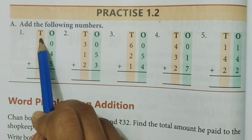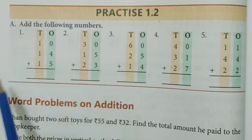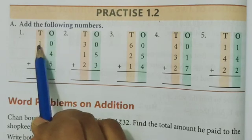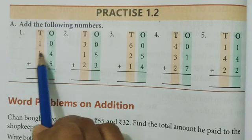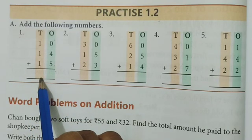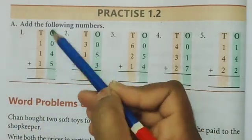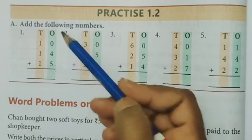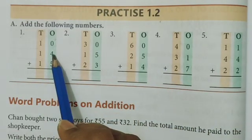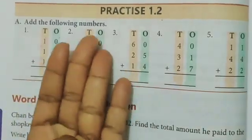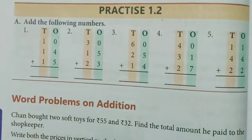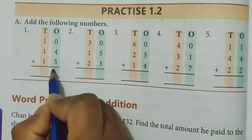Now see here first number. T for tens, O for ones. How many numbers are there? 3 2-digit numbers. Say me first number which is there? 10, 14, and 15. That means 10 plus 14 plus 15 we have to calculate the answer. First which column we will solve? Ones column. Now say me, 0 plus 4, that means 4. 4 plus 5, count your fingers, 4 plus 5, 9. Write here answer 9.